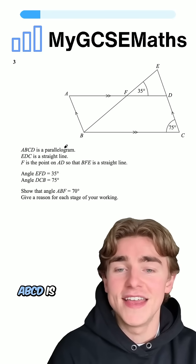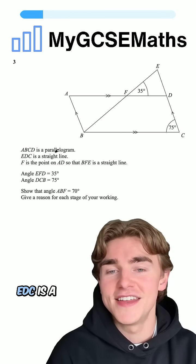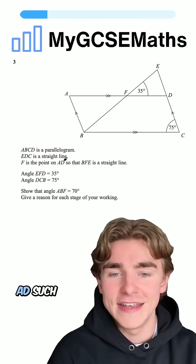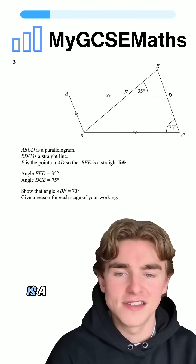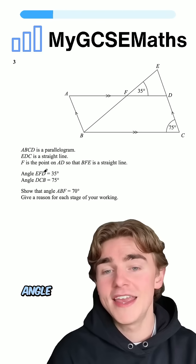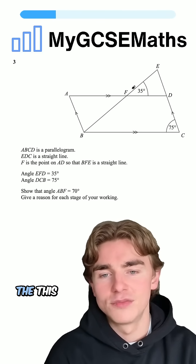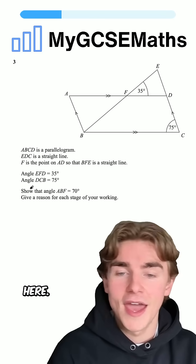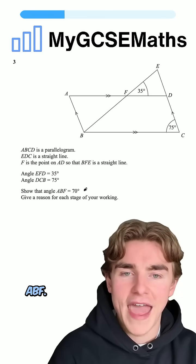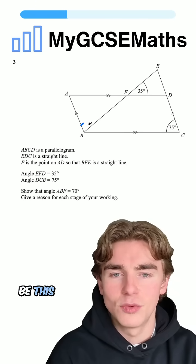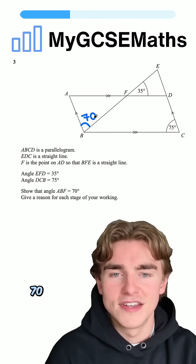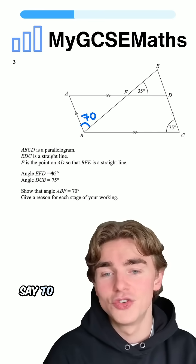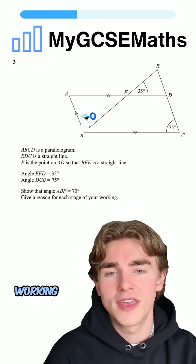The question says that ABCD is a parallelogram, EDC is a straight line, and F is the point on AD such that BFE is a straight line. We're told that angle EFD is 35 — that's this one up here — and angle DCB is 75 — this one down here. We're asked to show that angle ABF is equal to 70 degrees. It does say to give a reason for each stage of our working as well.